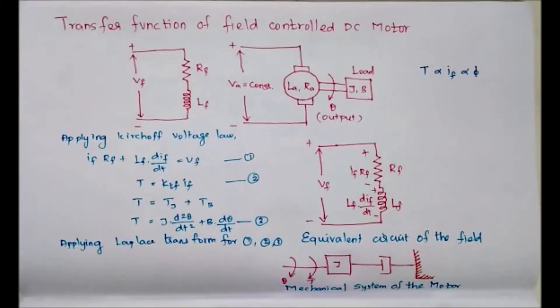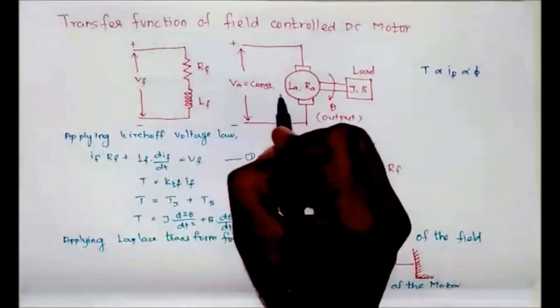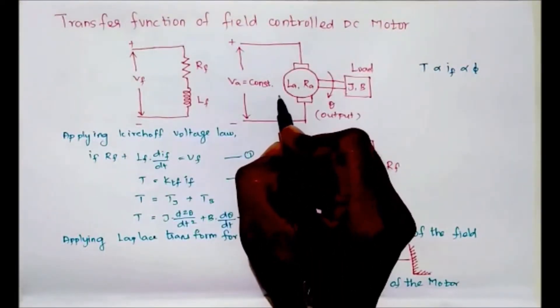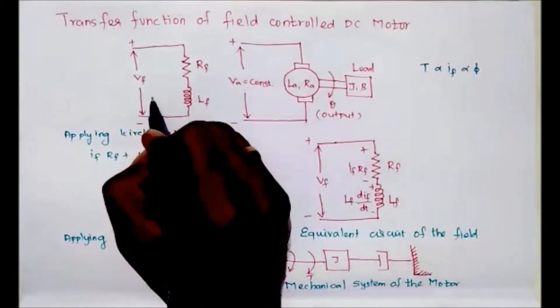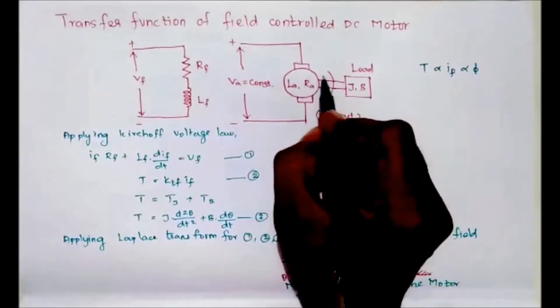In this video we are going to derive the transfer function of a field controlled DC motor. This is the equivalent circuit of a separately excited DC motor. This is the field circuit and this is the armature system.